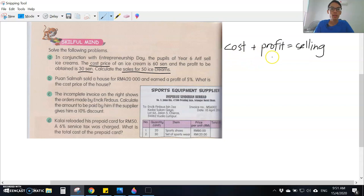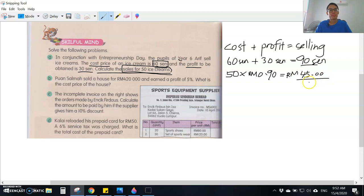The cost price is 60 cents. Profit to be obtained is 30 cents. So the selling price is 60 cents plus 30 cents equals 90 cents. This is for one ice cream. Now the question asks you to calculate the sales of 50 ice creams, so 50 times 90 cents. The answer is RM45.